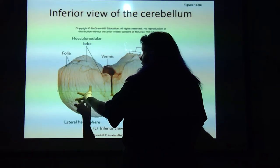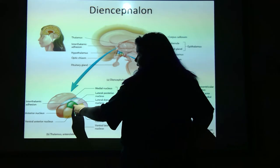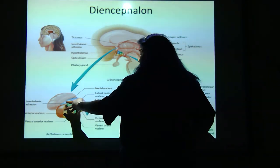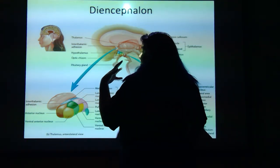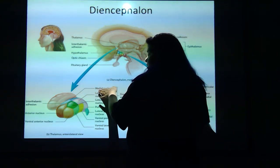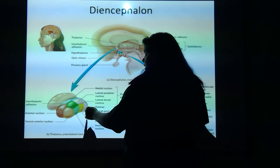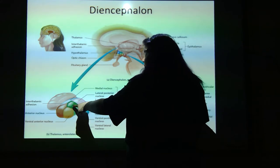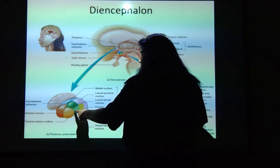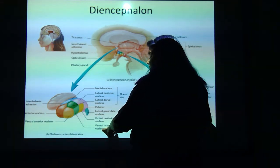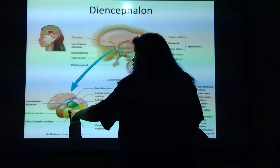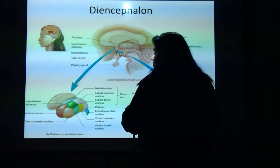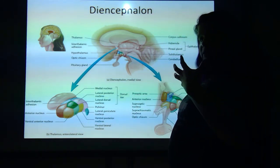The thalamus itself has different sections: you've got the medial nucleus, the lateral posterior nucleus, the pulvinar, the lateral geniculate nucleus, the lateral dorsal nucleus. The lighter green is the ventral lateral nucleus, the orange is the ventral anterior nucleus, and the red is the anterior nucleus. All of these different parts do different things.